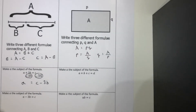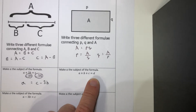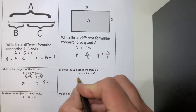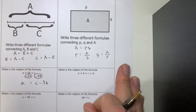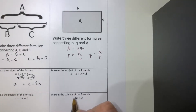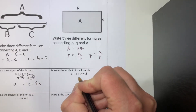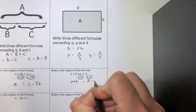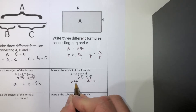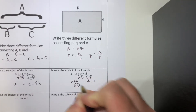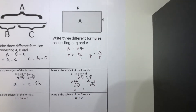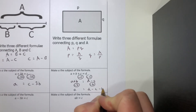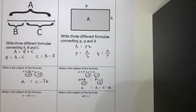This one's a bit more complicated - a add b add c equals d. What letter is currently the subject? D. What letter do we want to be the subject? A. At the moment we've got a plus b plus c, so we'll do it in stages. First get rid of the c - take it away from both sides, leaving a add b equals d take away c. We've still got plus b, so we'll take away b from both sides as well. Now a is on its own and equals d minus c minus b. That's your answer.